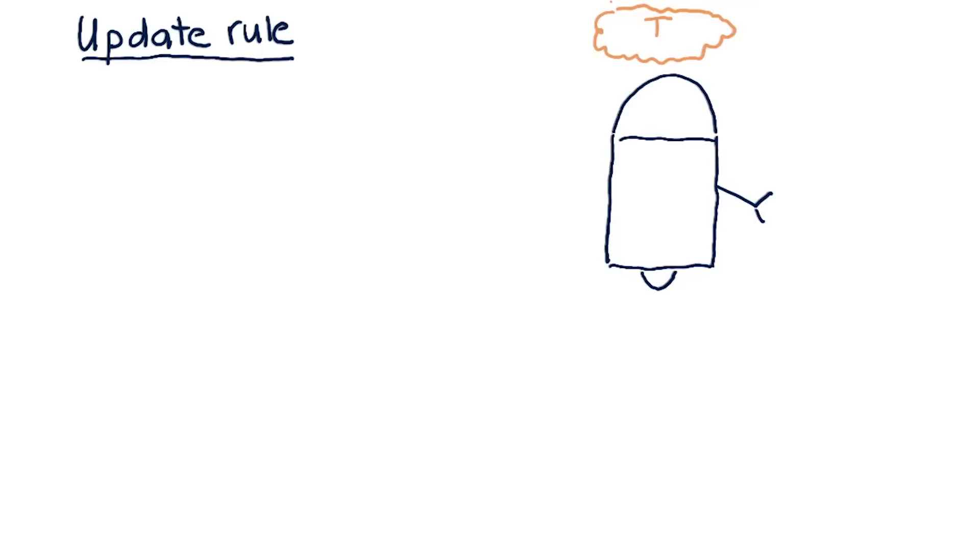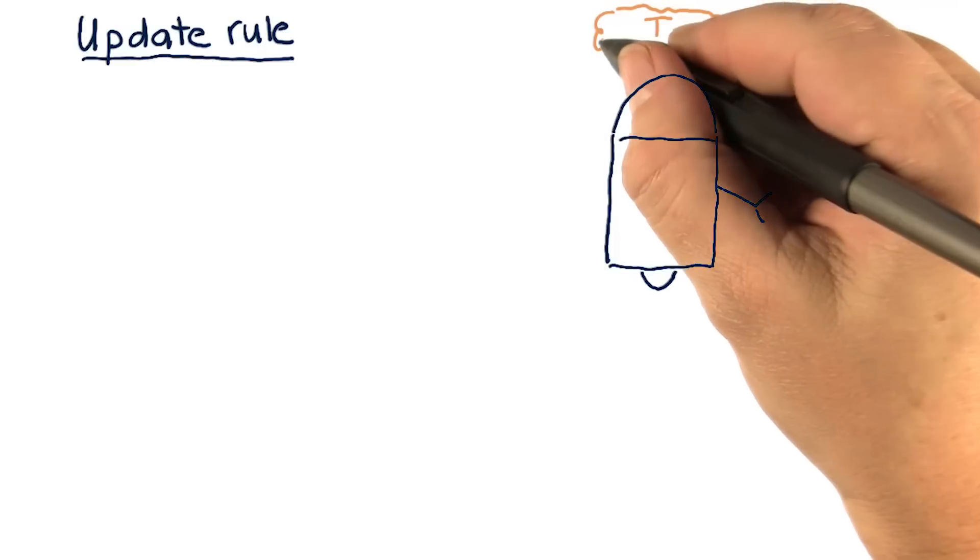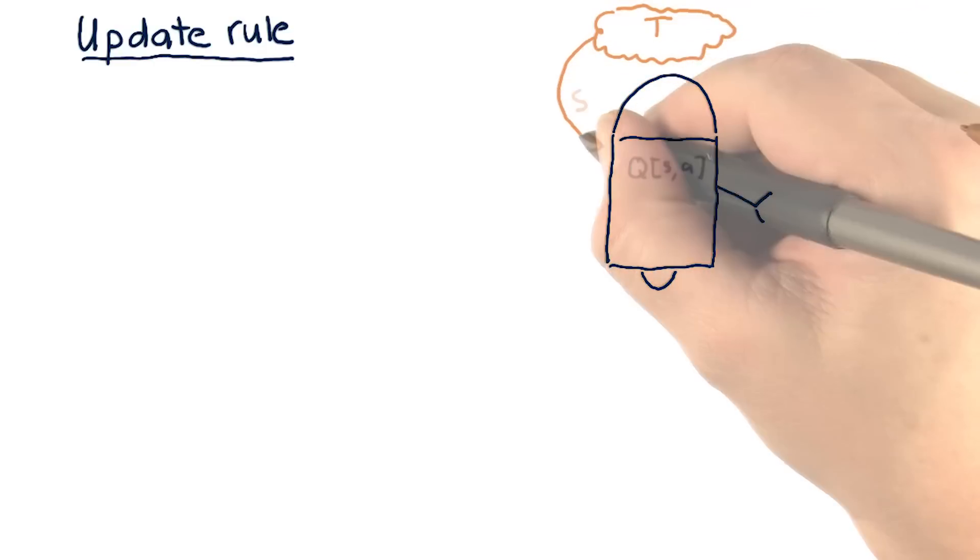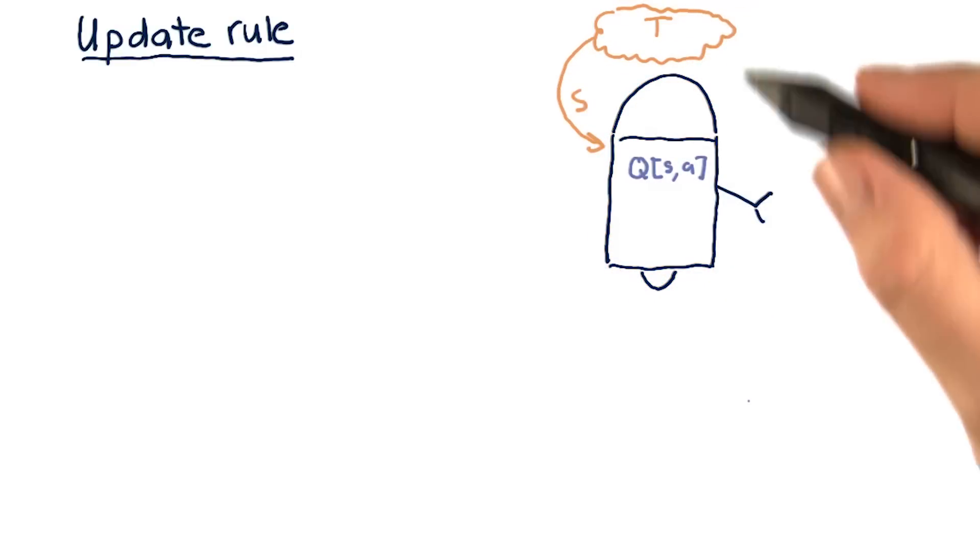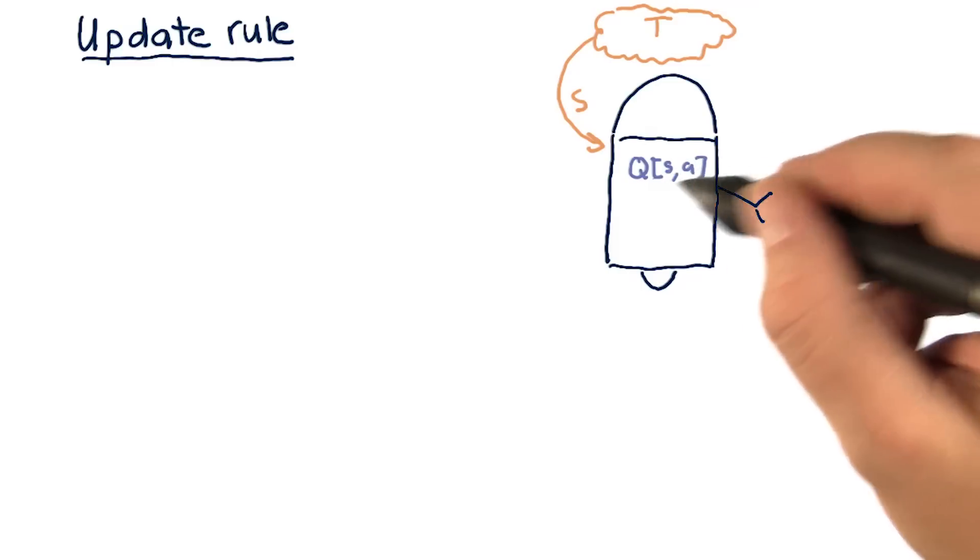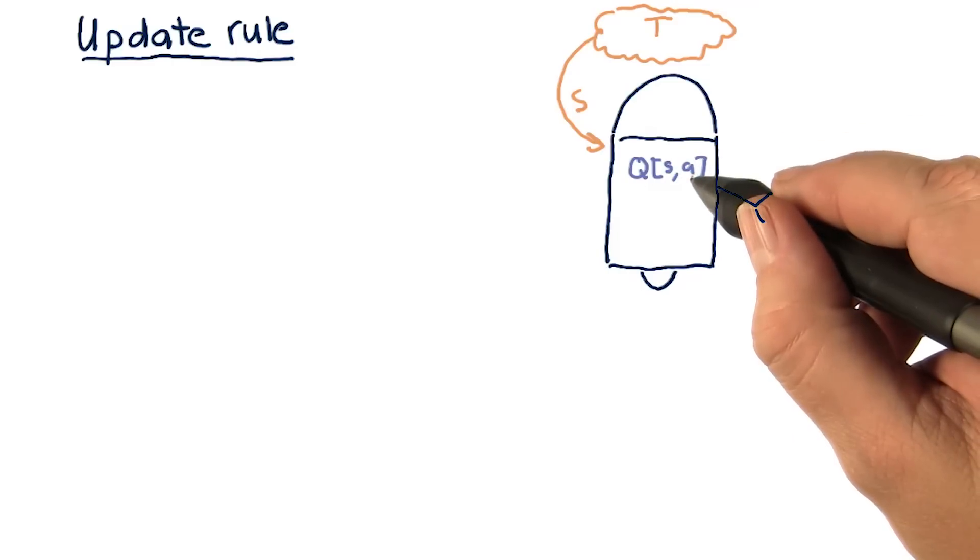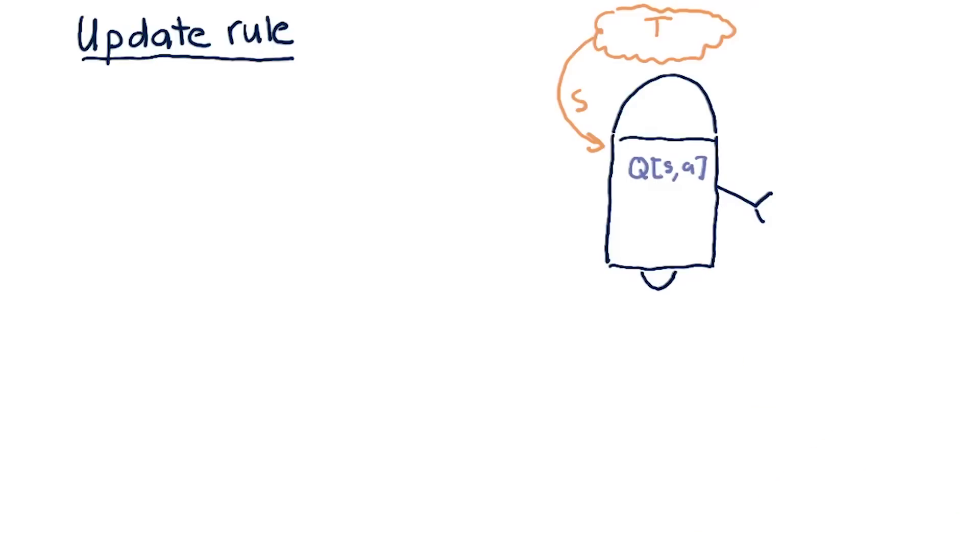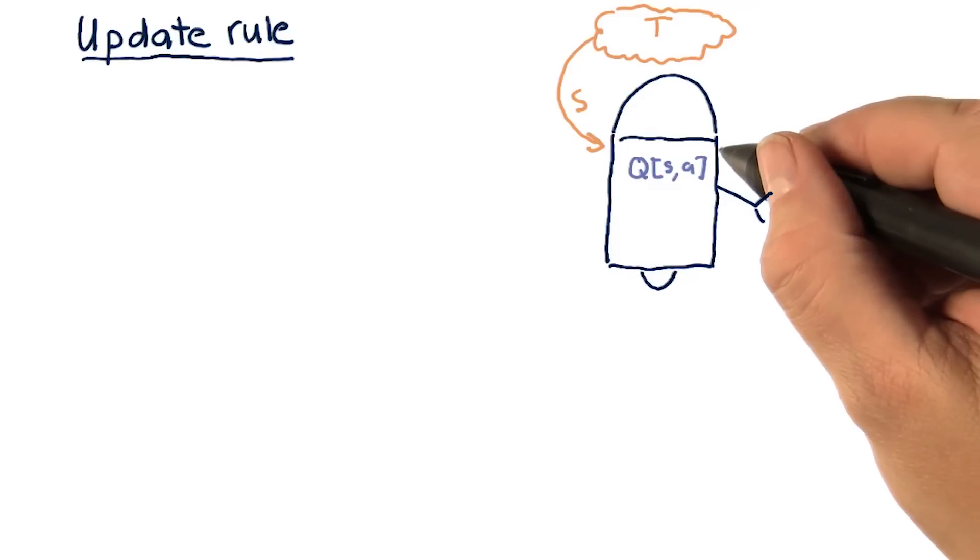Consider our robot here that's interacting with the world. The first thing it sees is some state. As we've talked about already, the thing to do now is to take that state, go look in the Q table, and find the action that corresponds to the maximum Q value, and then take that action.